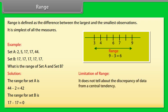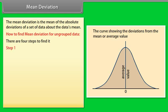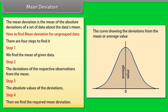Limitation of range: it does not tell about the discrepancy of data from a central tendency. Mean deviation is the mean of the absolute deviations of a set of data about the data's mean. To find mean deviation for ungrouped data, there are four steps: Step 1, we find the mean of the given data. Step 2, the deviations of the respective observations from the mean. Step 3, the absolute values of the deviations. Step 4, then we find the required mean deviation.